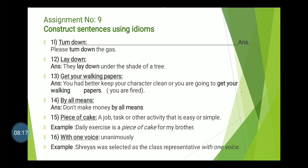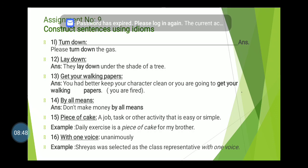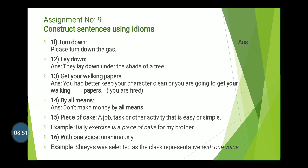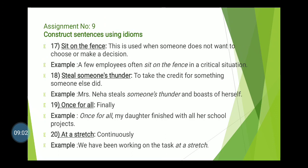Fourteenth: 'By all means' means using all the sources available — don't make money by all means. Fifteenth: 'Piece of cake' means a job, task, or other activity that is easy or simple. Example: Daily exercise is a piece of cake for my brother. Sixteenth: 'With one voice' means 'unanimously.' Example: He was selected as the class representative with one voice — meaning unanimously.